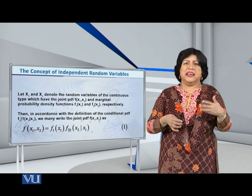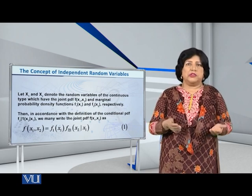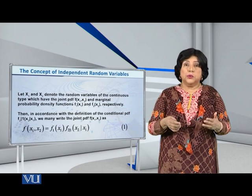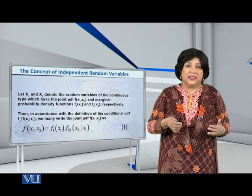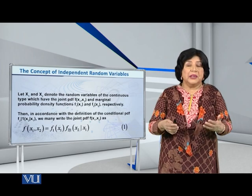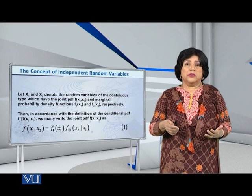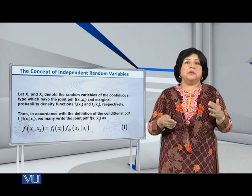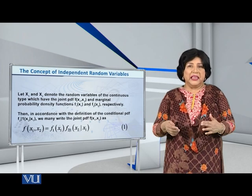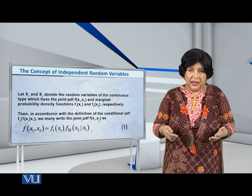Now, this is not a difficult thing. Do we not know the basic theorem of probability that probability of A intersection B is equal to probability of A multiplied by probability of B given A?